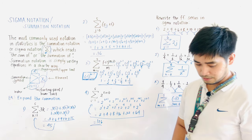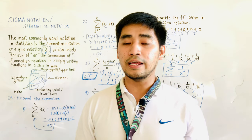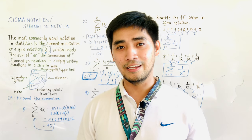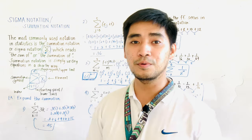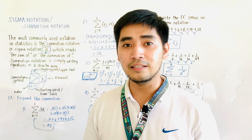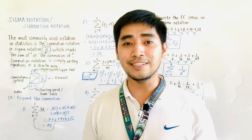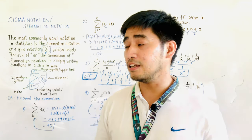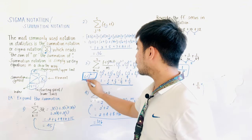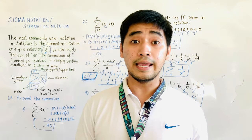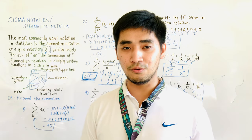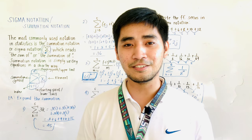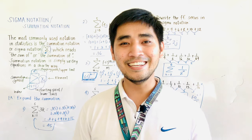A shorter way of writing a series is through summation notation. This is the process for expanding a summation notation and rewriting a series into sigma notation. If signs are alternating, use the formula (−1)^(m−1). Once again, I am Engineer Judd Edward Hernandez saying that mathematics is always fun. Goodbye and God bless.